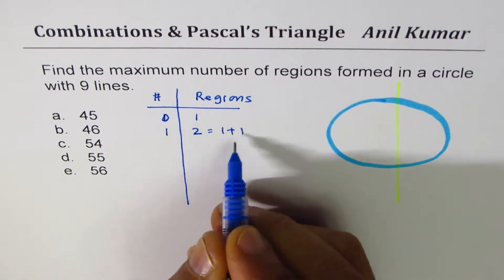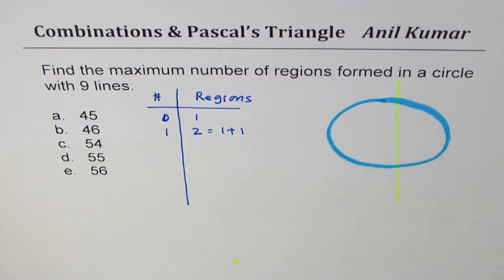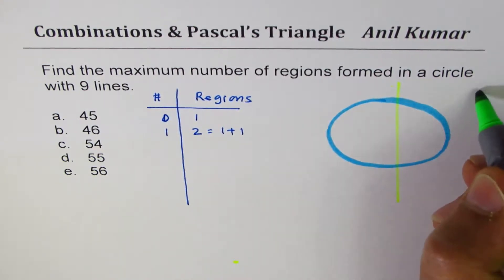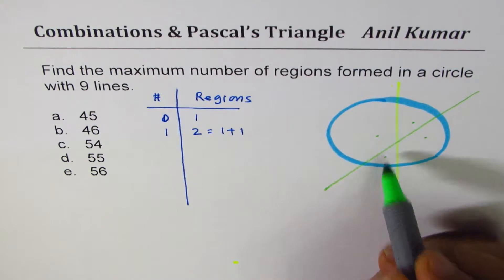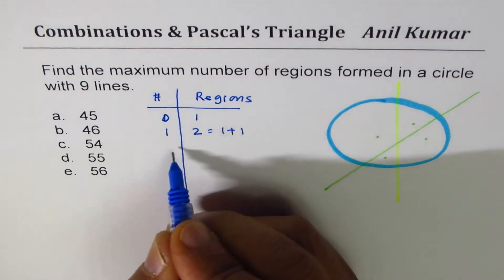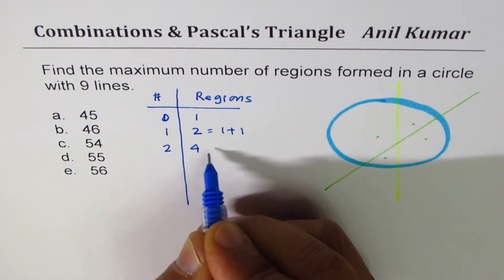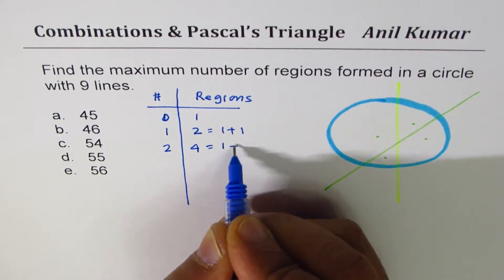One was already there, we added one more by adding this particular line. Now if I do another line here, we have one, two, three, four regions. So from two lines, four regions, which is one plus three.